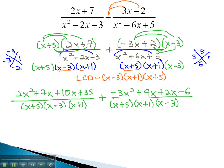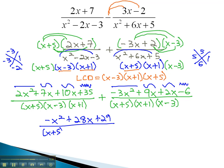The order of the factors doesn't matter, so we can combine like terms in the numerator now that we have a common denominator. 2x squared minus 3x squared is negative x squared. 7x plus 10x plus 9x plus 2x is 28x. 35 minus 6 is plus 29, over the common denominator, x plus 5, x minus 3, x plus 1.